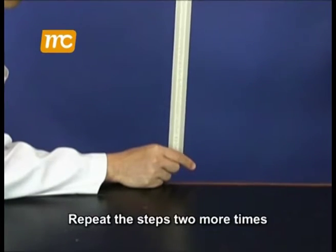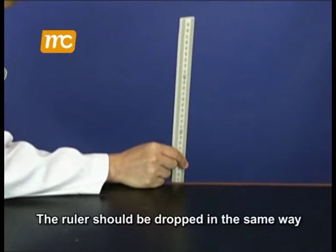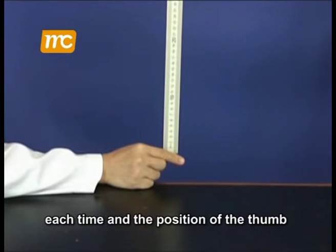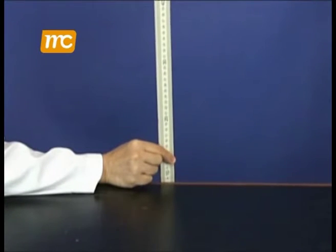Repeat the steps two more times. The ruler should be dropped in the same way each time and the position of the thumb and index finger should be the same.